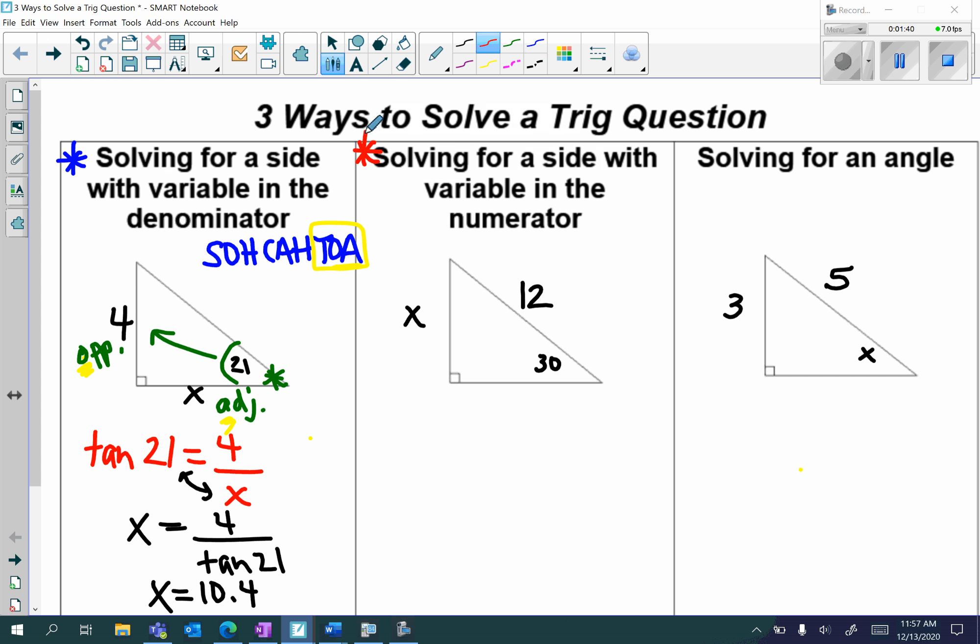Solving for a side with a variable in the numerator. So again, I'm going to write out SOHCAHTOA. I'm going to locate my central angle, which is my 30 degrees, and I'm going to label. x is going to be opposite, and my 12 is going to be the hypotenuse.